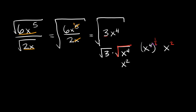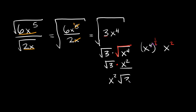So the square root of x to the fourth is equal to x squared, and the square root of 3 we can't reduce anymore. Whatever is not in a radical you want to put at the very beginning, so flip the position of these two. Write the x squared first and then multiply by the square root of 3. Your final answer is x squared times root 3.